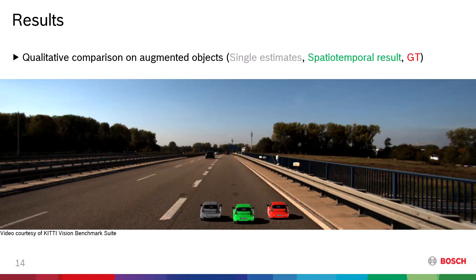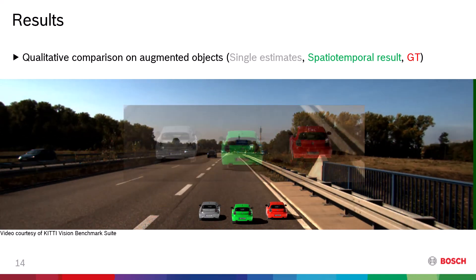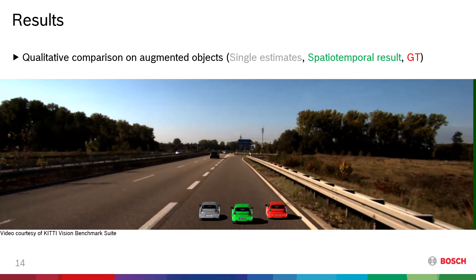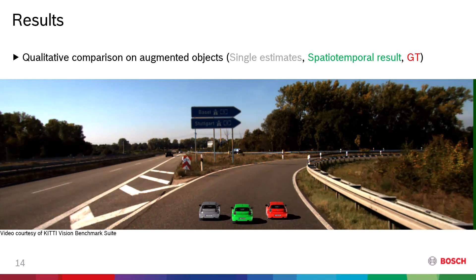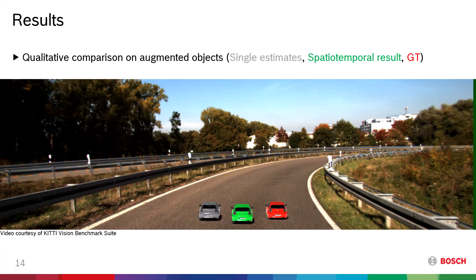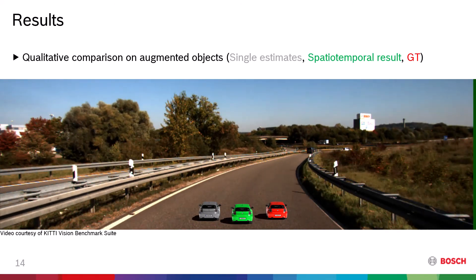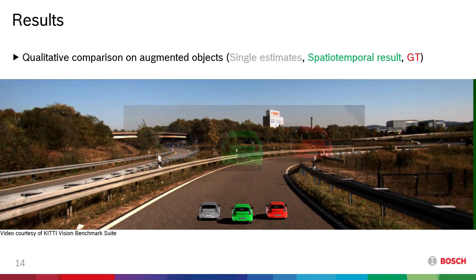Here is another augmentation example. The gray car is illuminated with single lighting estimates where the green and red cars are using the sun's directions from the spatial-temporal aggregation and the ground truth. While the shadows and reflections of the green car look like the ground truth, the gray car's appearance changes a lot in the sequence.